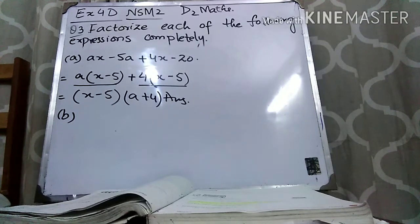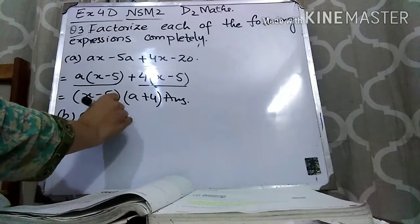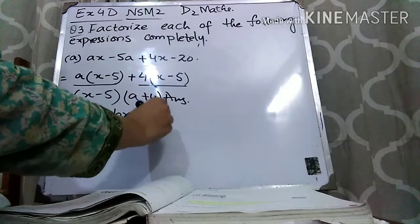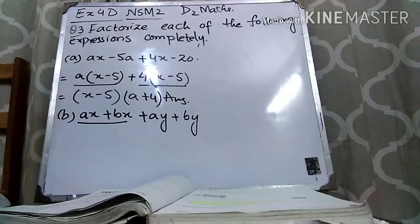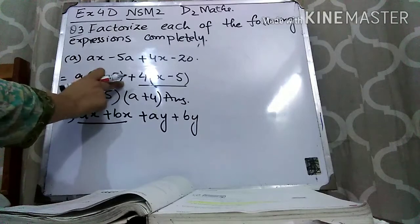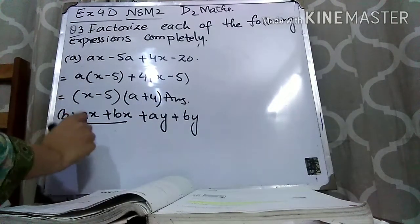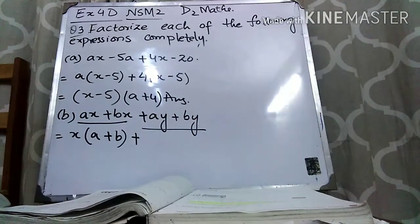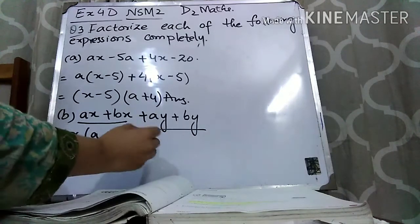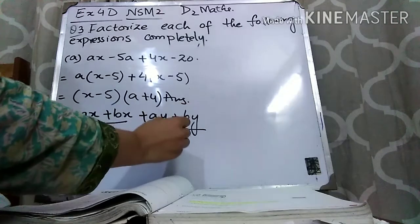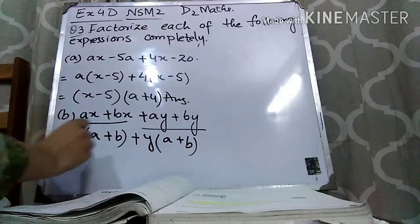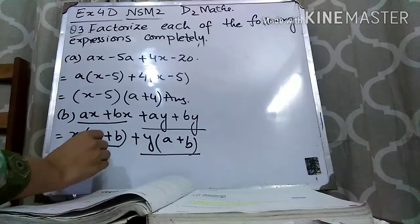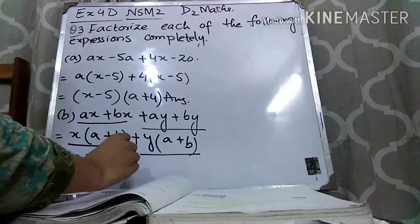Part B is ax + bx + ay + by. From the first two terms, X is common: taking X common leaves A and B. From the last two terms, Y is common: taking Y common also leaves A and B. Now (A + B) is common in both groups. So the answer is (A + B)(X + Y).